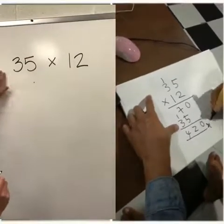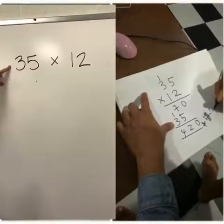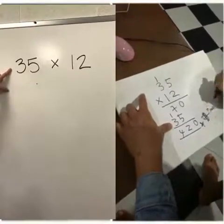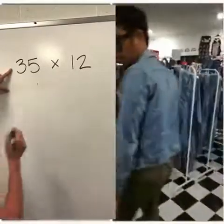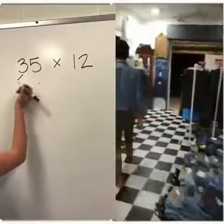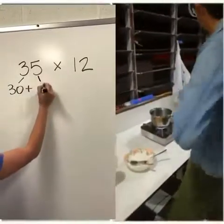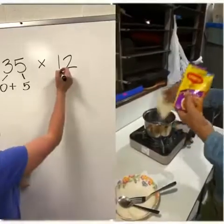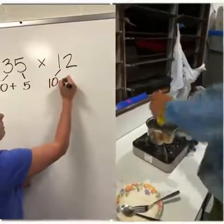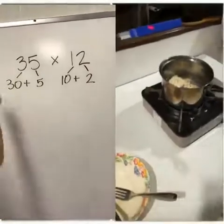First, we have our multiplication problem 35 times 12. The first thing we need to do is expand these two numbers. We need to break it down into its tens and ones. I've got three tens which is 30 and five ones, so that is 30 plus 5. 12 is one ten plus two ones. Okay, so that's step one.